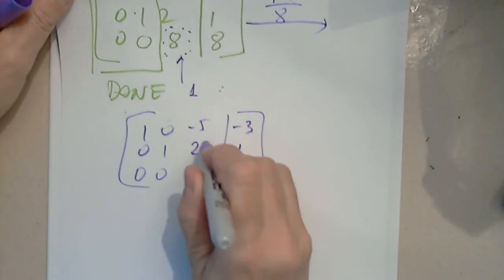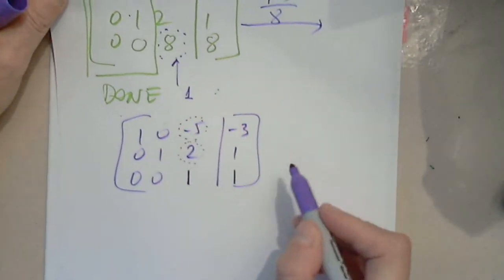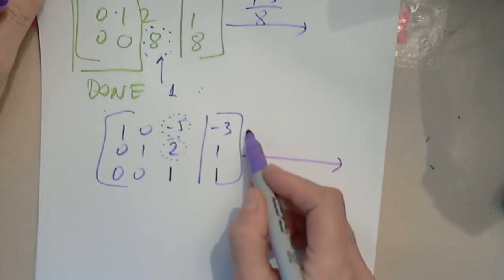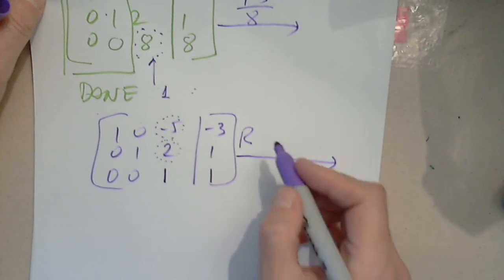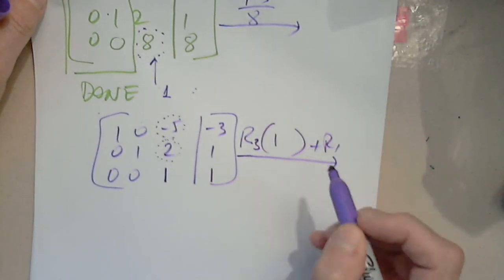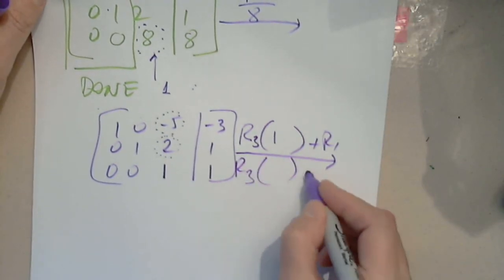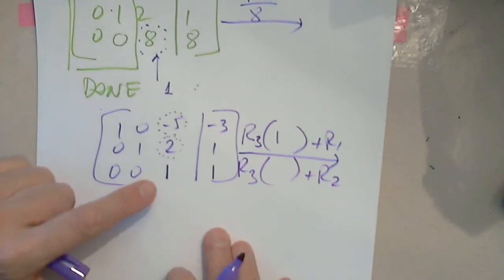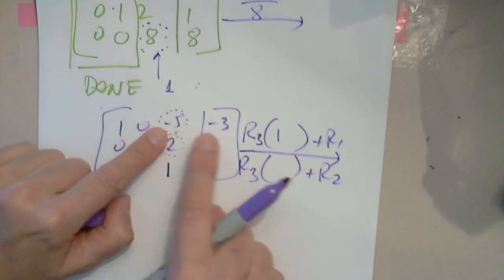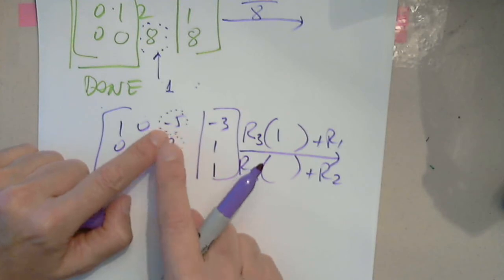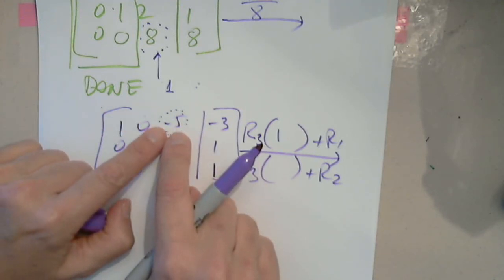So now our final step is to get a 0 here and to get a 0 here. It's the last step. Which row do we have to use? Row 3. Very good. And we are adding it to row 1 — don't write anything, I just by mistake wrote that — and we add it into row 2. What do I multiply 1 by to eliminate the negative 5 in row 1?